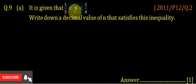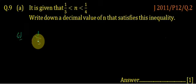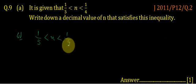It is given that 1 upon 5 is less than n which is less than 1 upon 4. Write down a decimal value of n that satisfies the inequalities. First we rewrite the equation.